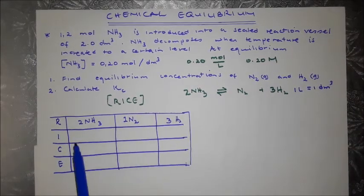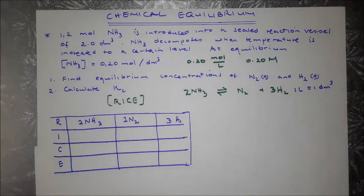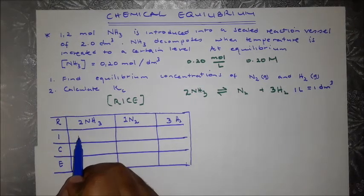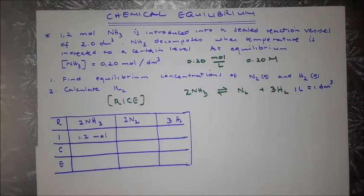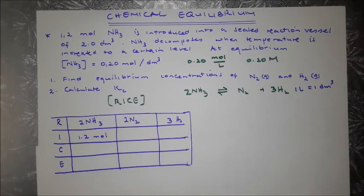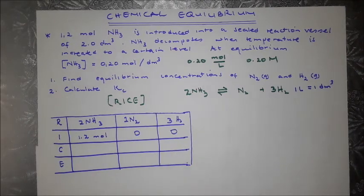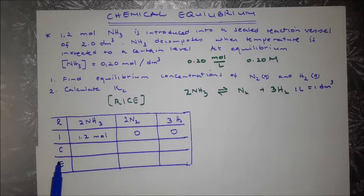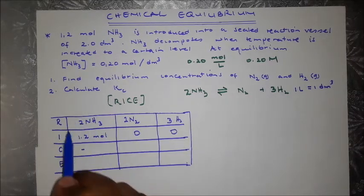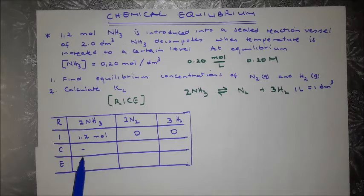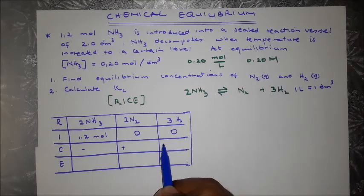For initial quantities, we're given 1.2 mol of ammonia — so we put 1.2 mol here. For the products initially, we don't have any — they are zero, because ammonia still needs to decompose to form them. As the reaction progresses there is a change: the reactant quantity decreases, so we use a negative; the products increase, so we add.